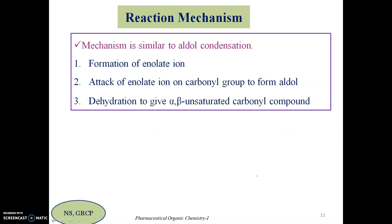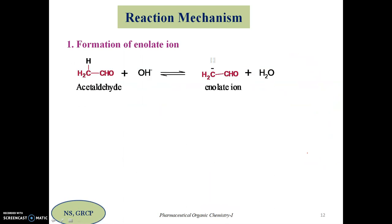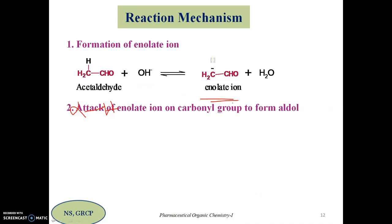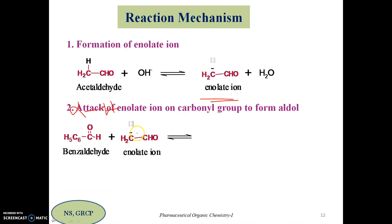Let us see the mechanism for crossed aldol condensation using the reaction between acetaldehyde and benzaldehyde. The mechanism has three similar steps, but the key difference is: in simple aldol condensation both aldehydes have alpha hydrogen, so enolate formation can start with either. In crossed aldol condensation, only one compound has alpha hydrogen, so we must take the aldehyde with alpha hydrogen for enolate ion formation — that is acetaldehyde, not benzaldehyde.